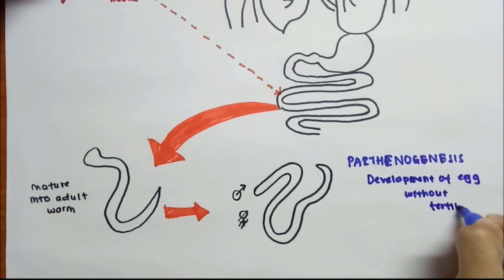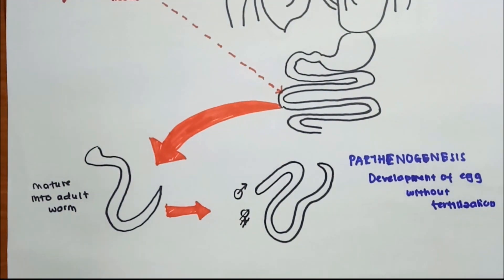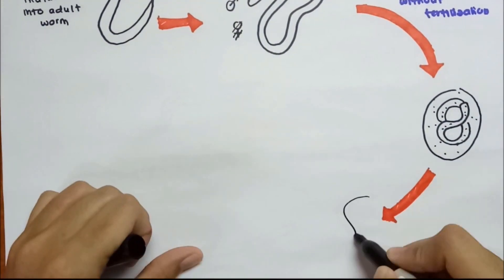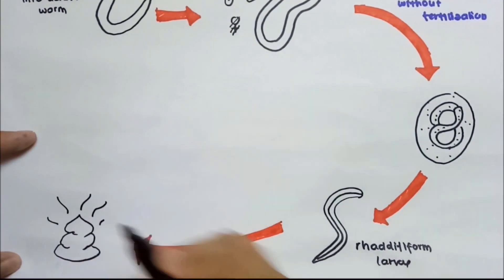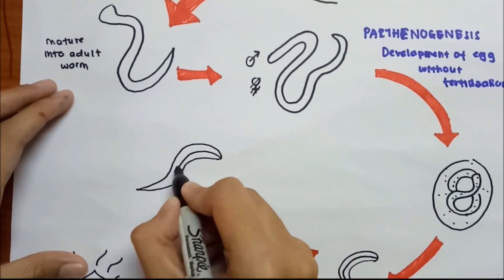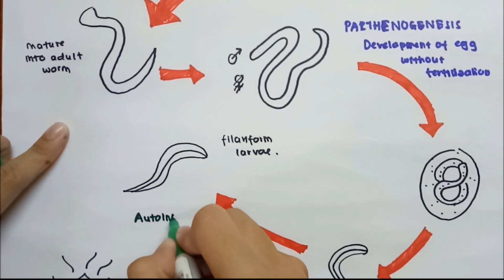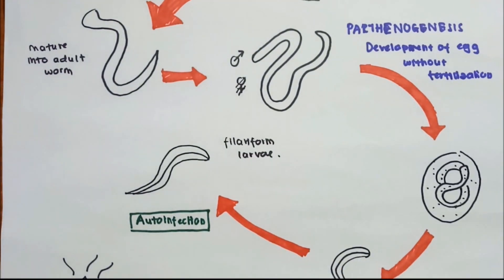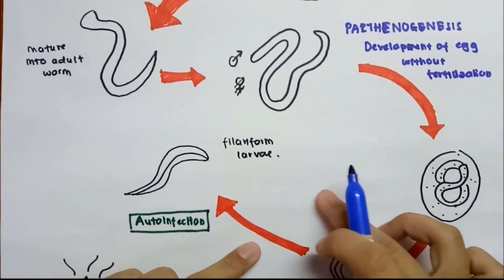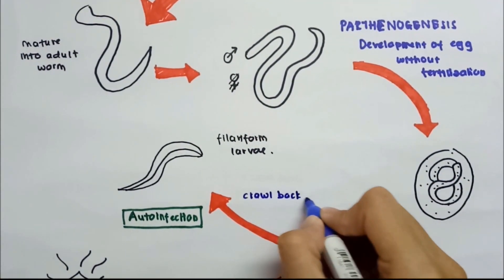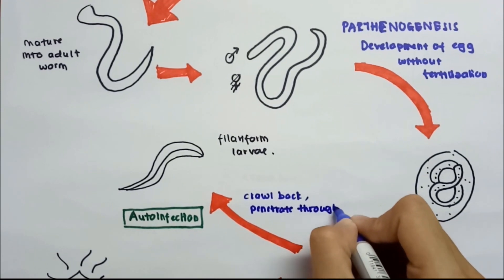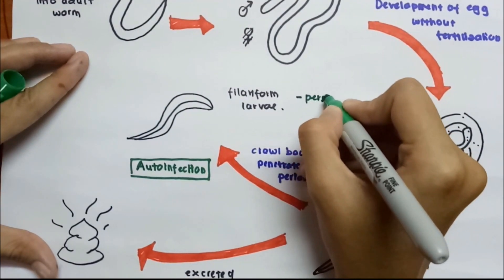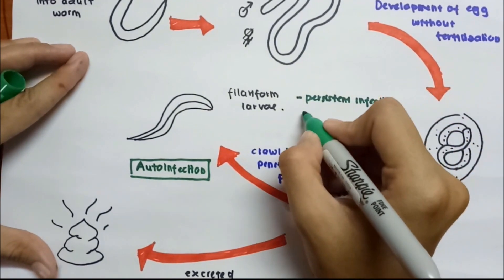The female worms produce eggs without fertilization through a process called parthenogenesis. The eggs are deposited in the intestinal mucosa, hatched into rhabditiform larvae, and migrate to the lumen of the large intestine. The rhabditiform larvae in the large intestine can either be passed into the stool or proceed with auto-infection, where they develop into filariform larvae that can penetrate the intestinal mucosa or the perianal skin, migrating to other organs and causing disseminated disease of Strongyloides stercoralis.